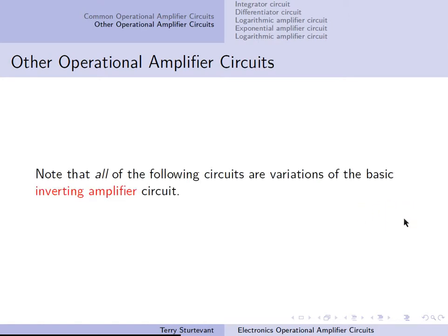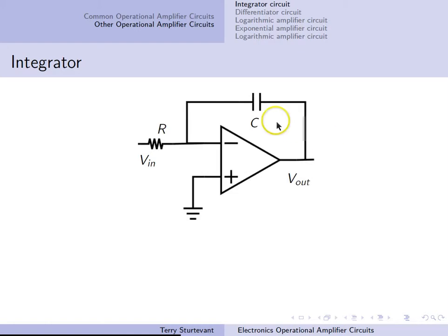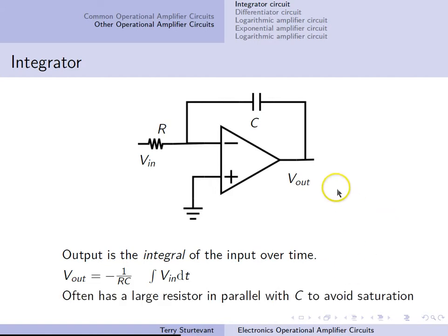All of these circuits that follow are based on the inverting amplifier circuit. Here's the integrator circuit, where we've replaced one of the resistors by a capacitor. The output is the integral of the input over time. The output equals minus 1 over RC times the integral of VIN DT. Often you place a large resistor in parallel with C to avoid saturation, because since this is integrating the input voltage, if there's any constant DC component to this voltage, then over time that will make the output hit the rails.